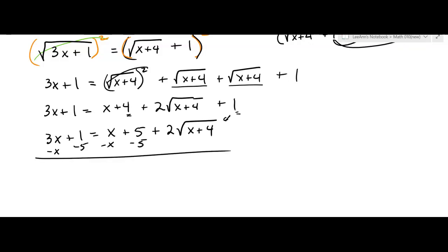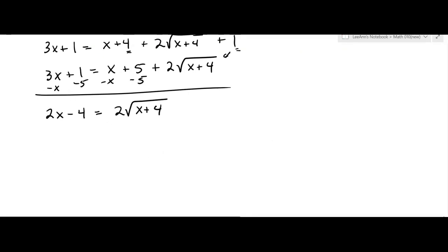I'm going to subtract x from both sides and subtract 5 from both sides, giving me 2x minus 4 equals 2 times the square root of x plus 4. Then I'll divide both sides by 2 to make it a little easier, giving x minus 2 equals the square root of x plus 4. If you didn't divide by 2, you'd have to square the 2 as well.